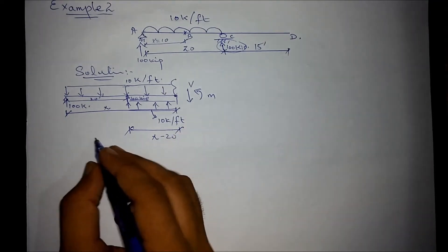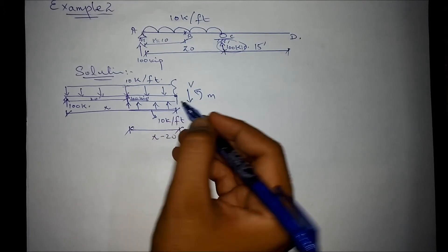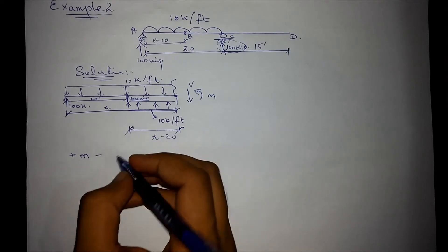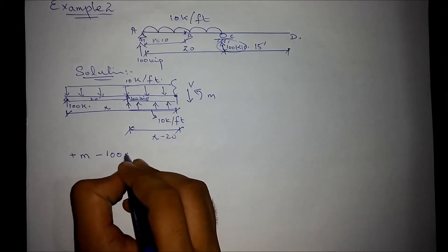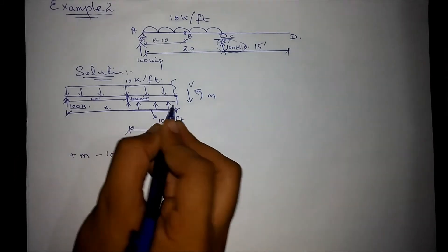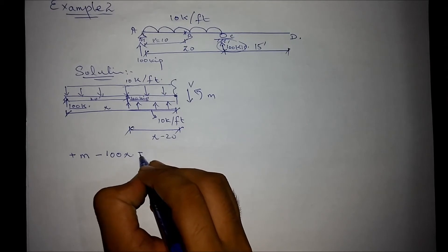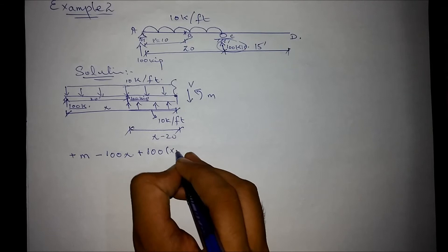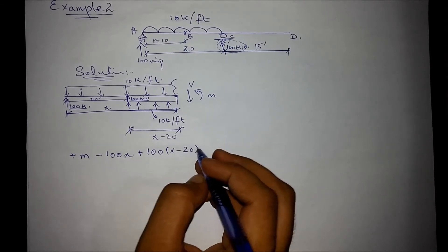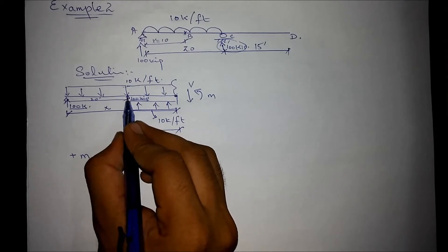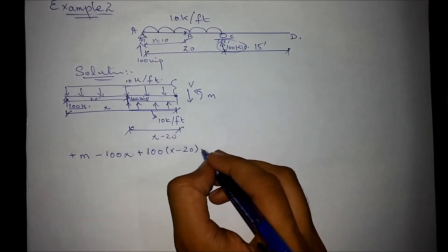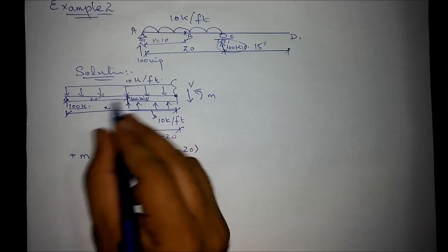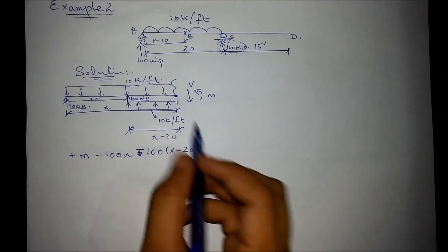So, performing the general moment equation, we sum up the moment over this point. That is m minus 100 into x, that is this 100 into this distance. That means m minus 100 into x plus 100 into x minus 20. That is this direction into the lever arm x minus 20. Actually, it wouldn't be having a negative sign since both of them are rotating clockwise while we assume anticlockwise as positive.